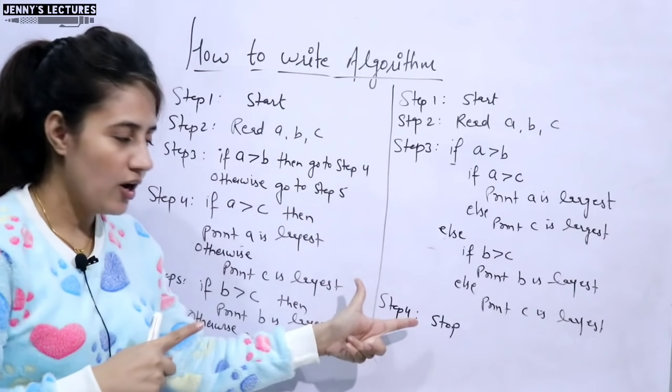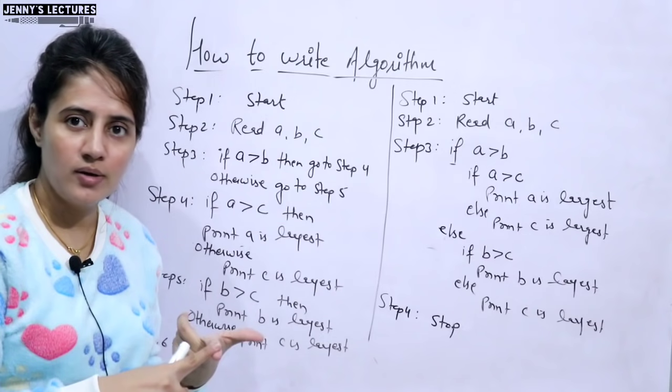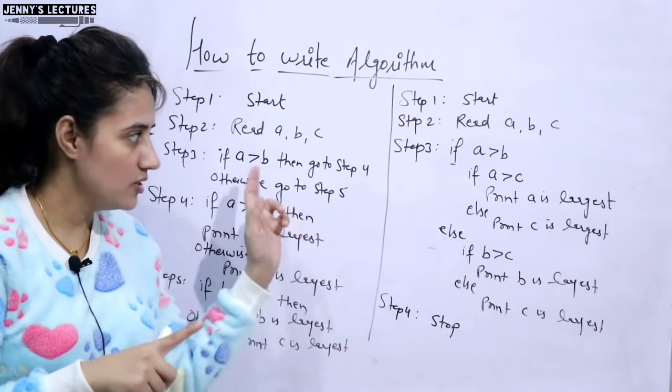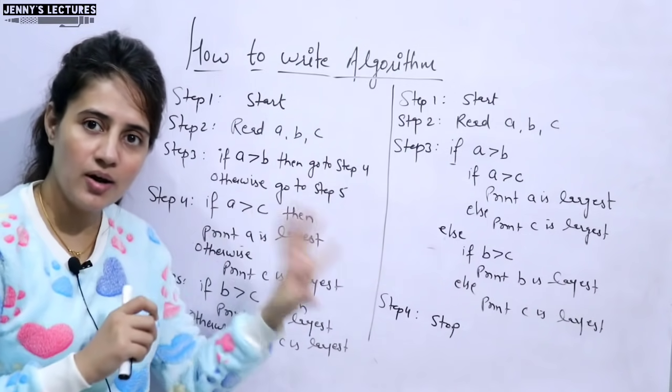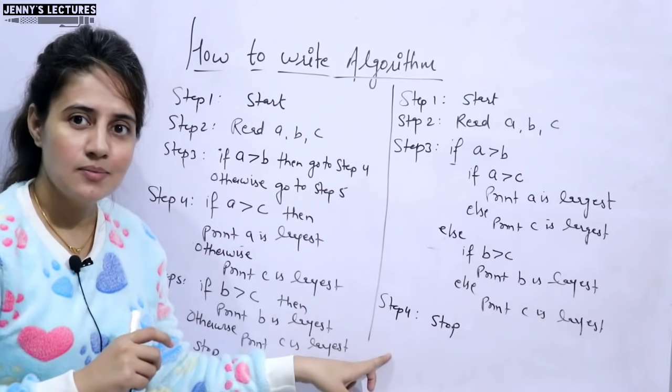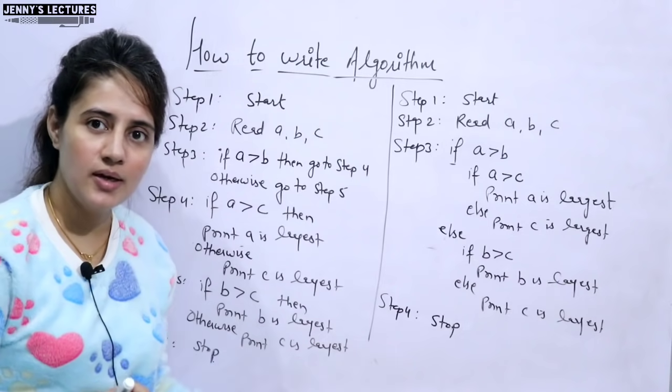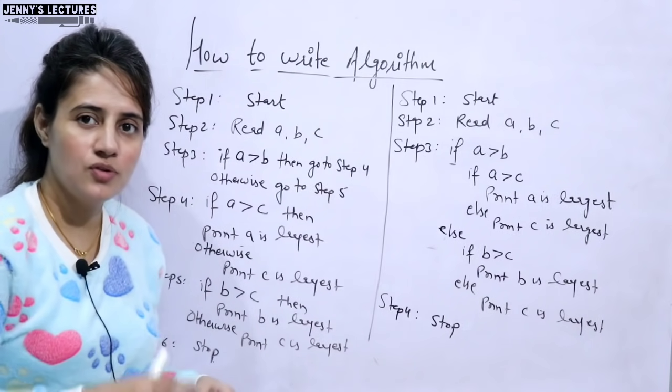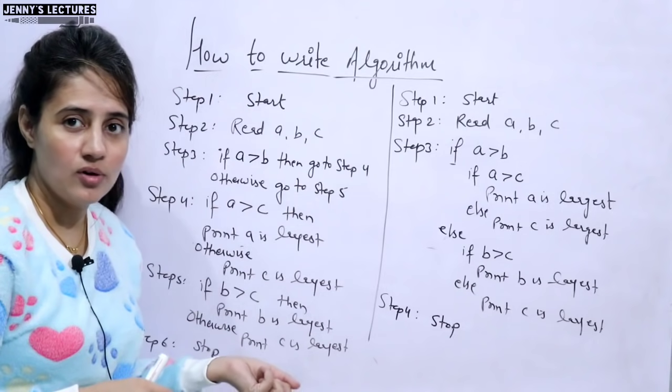So steps would be same. It doesn't matter you are implementing this in C language, Java language, Python, or .NET, or in any other language. But when you are writing algorithm, you have to follow the properties. Input there should be one output. Input can be zero or more. Output should be one. And every statement would be clear, have one meaning, unambiguous. There should be finiteness, means finite steps would be there in algorithm. All these properties we have already discussed. So I hope you got how to write an algorithm.